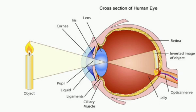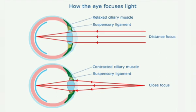The ciliary muscles either contract or relax depending on the distance of the object. When distant objects are viewed, the ciliary muscles relax, pulling the lens so it becomes thin and elongated. The lens becomes less convex, and the focal length increases.